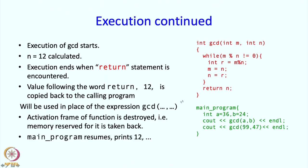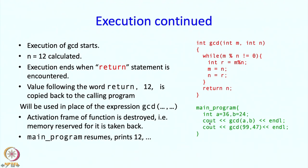At this point, the suspended execution of the main program resumes. The value of gcd(a, b) has been evaluated as 12, so 12 gets printed. After that, main program execution continues with gcd(99, 47). The same thing happens again: 99 and 47 are copied to m and n, an activation frame is created, GCD is computed and returned to the main program, which can then do whatever it wants with the value.